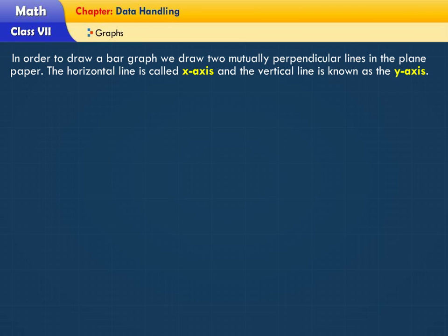In order to draw a bar graph, we draw two mutually perpendicular lines in the plain paper. The horizontal line is called x-axis and the vertical line is known as the y-axis.